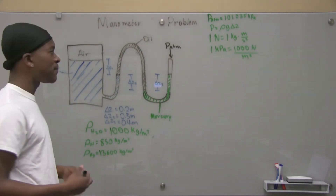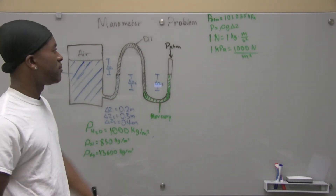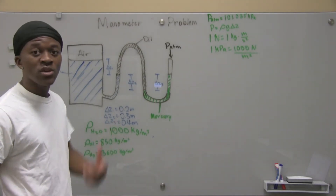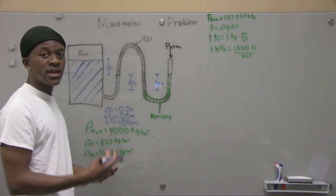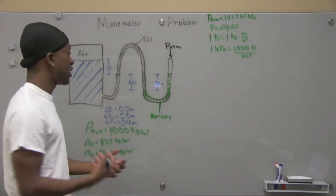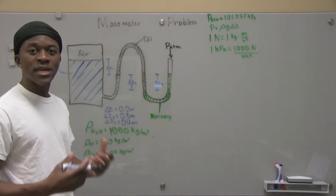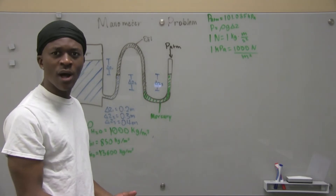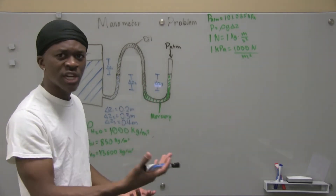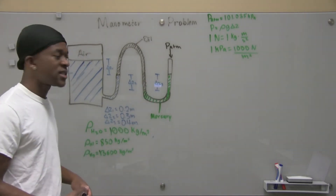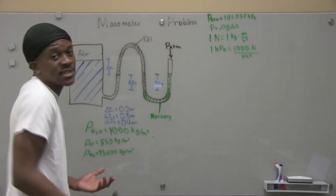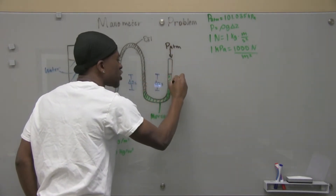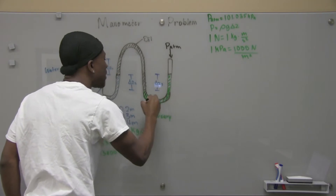Now how are we going to do that? We have our density equation, rho*g*delta_z, and we're going to use that to help find the pressure in this tank. Remember what I said about pressure changing in the vertical plane and not changing in the horizontal plane — it's the same thing here. As we're going down, pressure is increasing, and as we come back up, pressure starts to decrease.